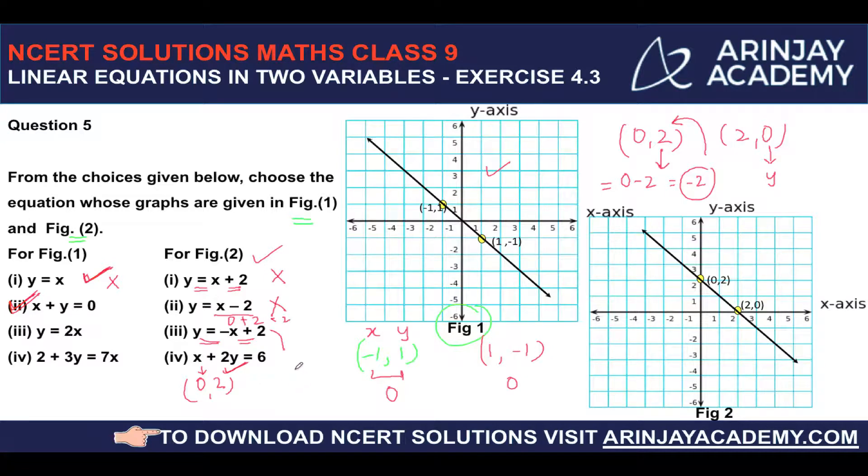But is it true for the second point also? (2, 0) is the second point. So here x = 2. If I substitute the value of x, I get -2 + 2 = 0. And the value of y given here is 0, which means that this line satisfies this particular equation.